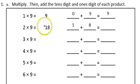2 times 9 is 18. 1 is the tens digit. 8 is the ones digit. 1 plus 8 equals 9.